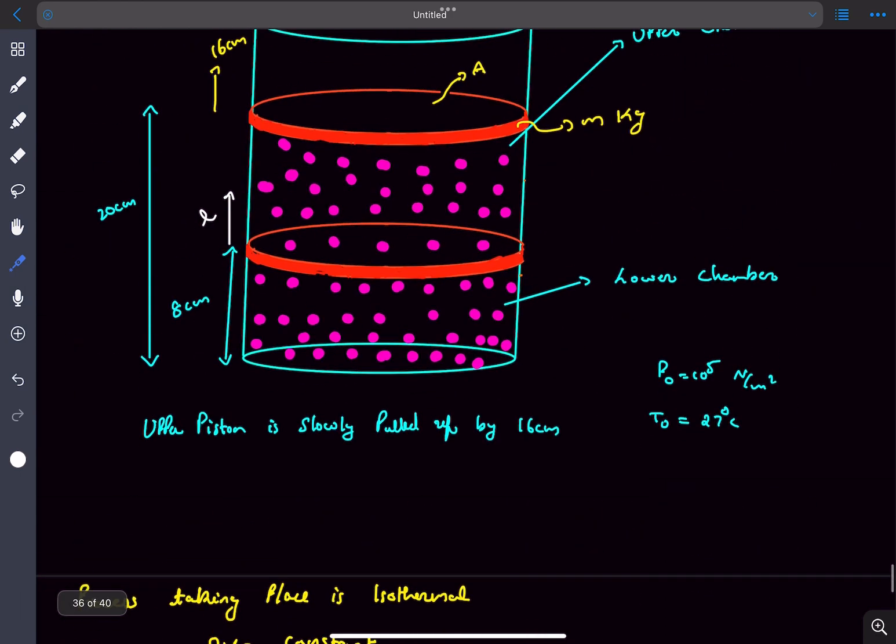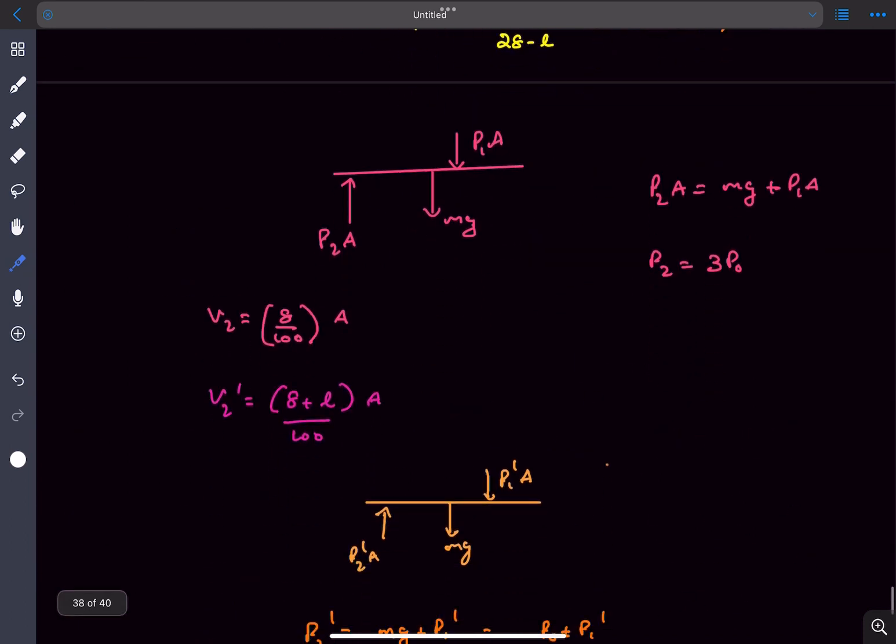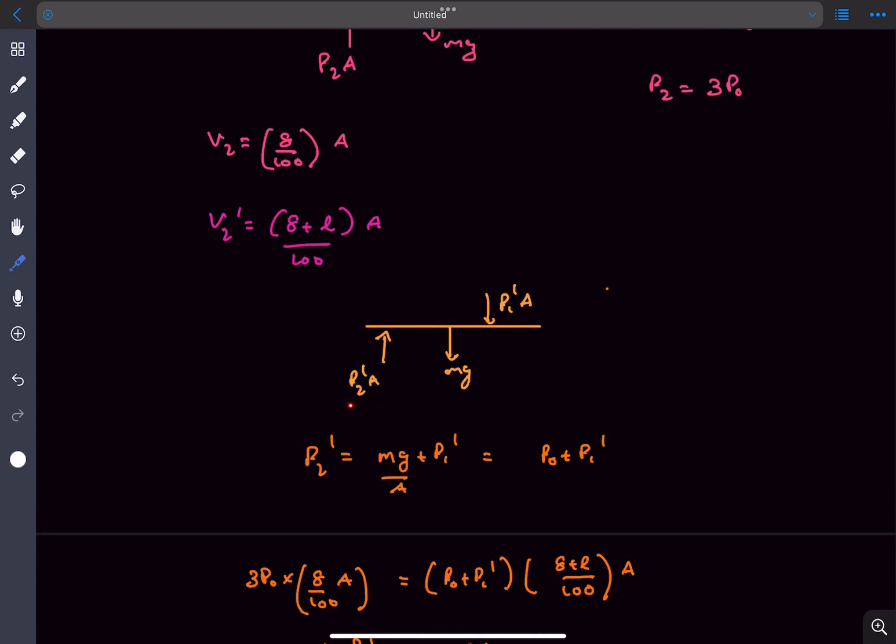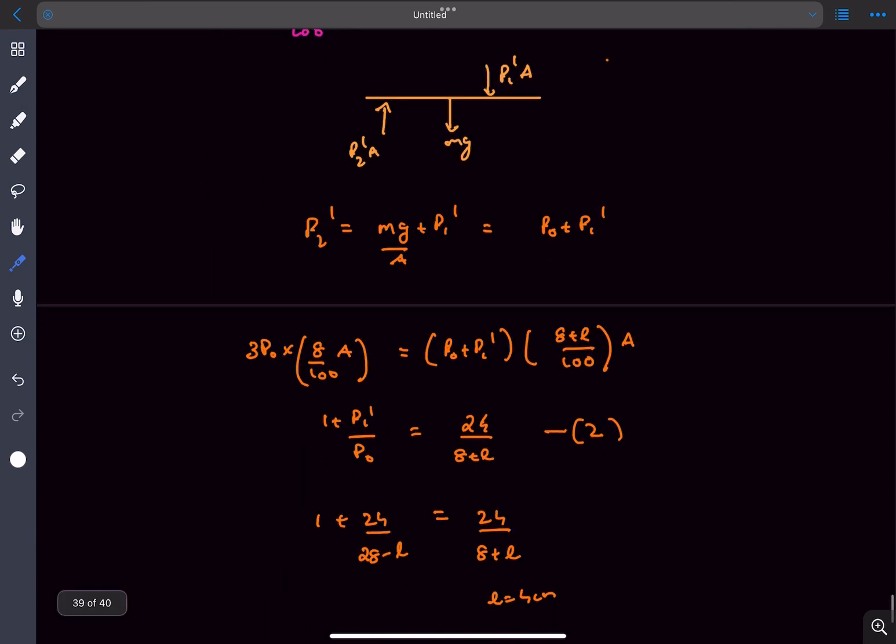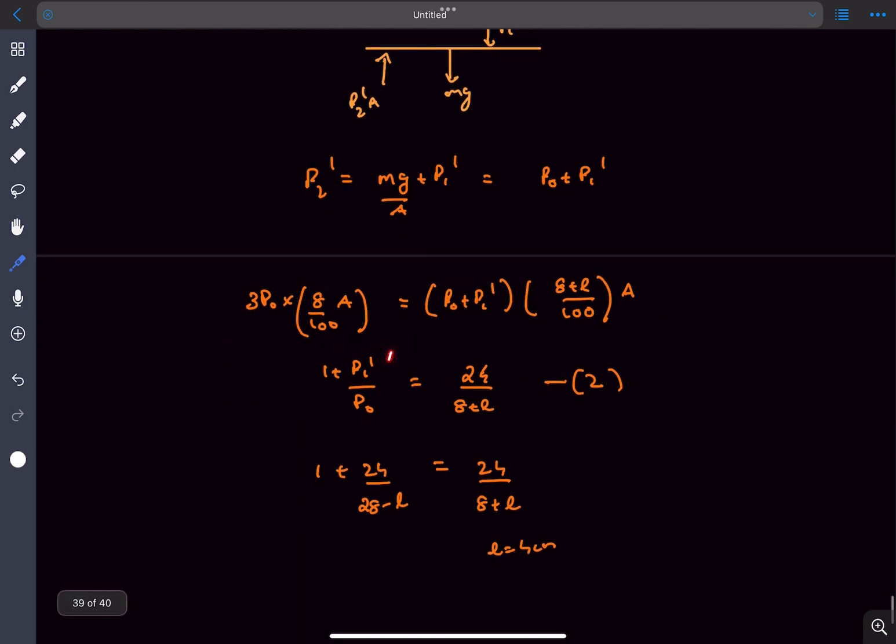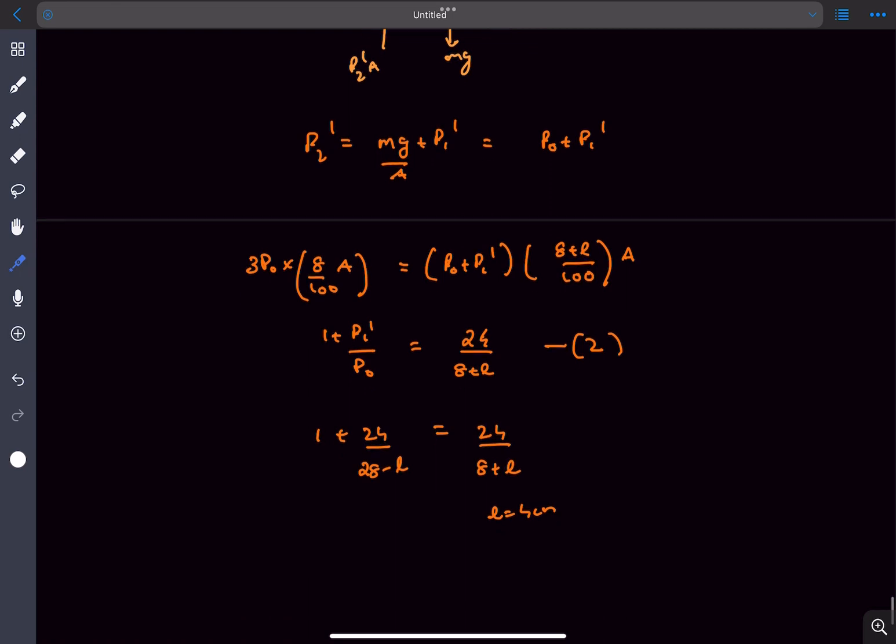V2, the initial volume of the bottom container, is 8 times A. The final volume, as the bottom lid moves up by L, is 8 plus L divided by 100 times A. In the final state, the pressure is P2 dash. The final pressure in the upper chamber is P1 dash. Balancing the forces, we get P2 dash in terms of P1 dash. Applying PV equals constant in the bottom chamber, we get another relation between P1 dash and L.